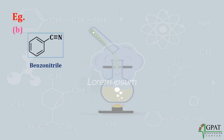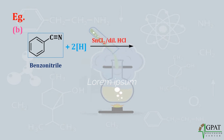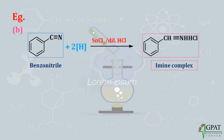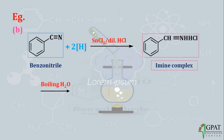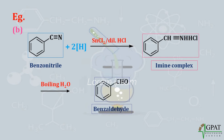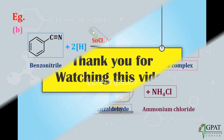Now let's take another example using an aromatic nitrile. Benzonitrile on reduction with stannous chloride and diluted HCl forms an imine complex. This imine complex on hydrolysis with boiling water forms benzaldehyde, along with the side product ammonium chloride. This concludes the Stephen reaction.